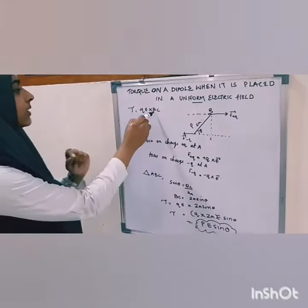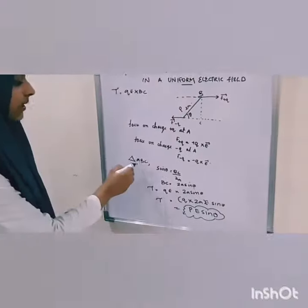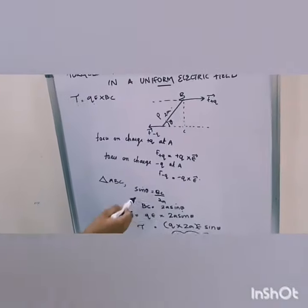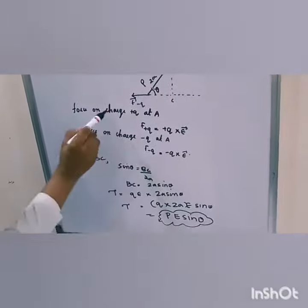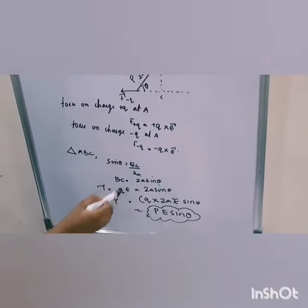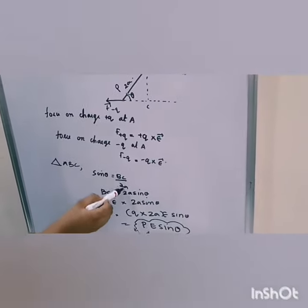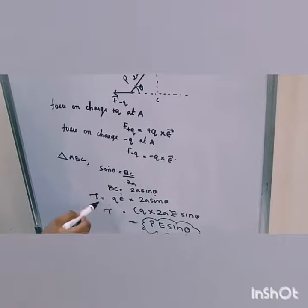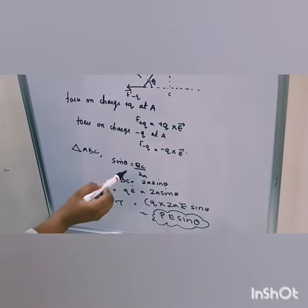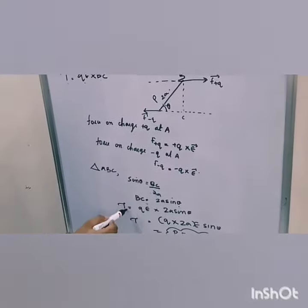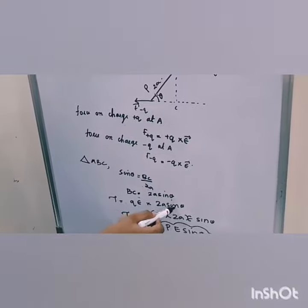From triangle ABC, sin Theta equals BC by 2A, so BC equals 2A sin Theta. Therefore, we can substitute BC in the torque. Torque equals QE into 2A sin Theta.